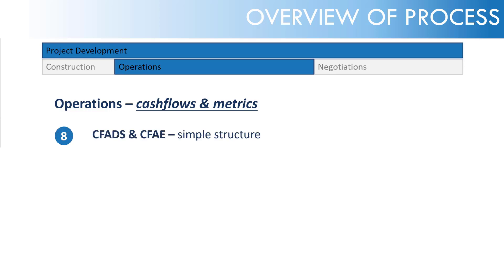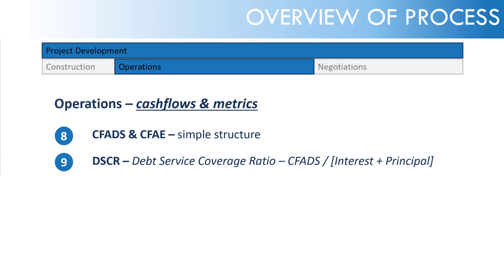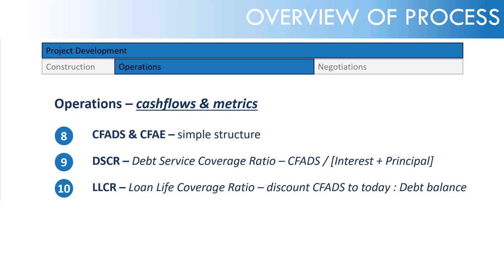Then we'll get into operations cash flows and metrics, looking at CFADS — cash flow available for debt service — and CFAE, cash flow available for equity, using a simple cash flow waterfall structure. Then getting into the metrics: the DSCR, the debt service coverage ratio, which looks at how many times CFADS can pay that period's interest plus principal. Then the loan life coverage ratio: the discounted CFADS divided by the debt balance — how many times can the NPV of CFADS pay the debt balance.